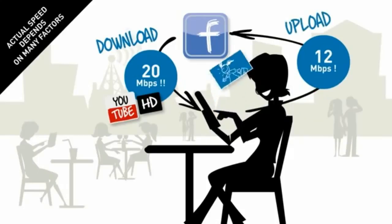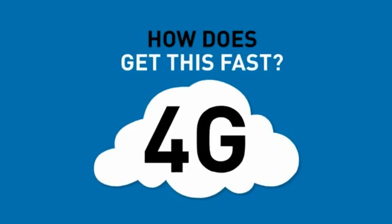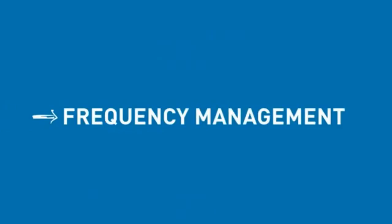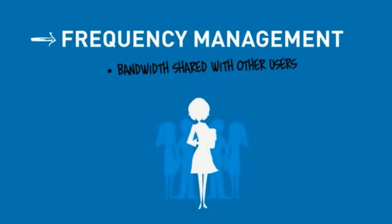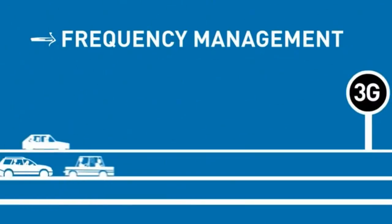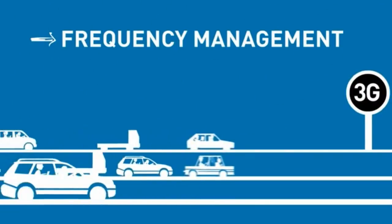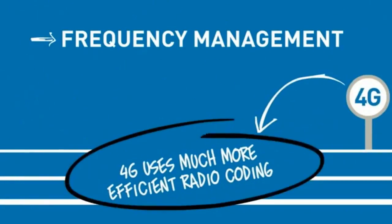Under normal conditions you will still reach average speeds of around 20 megabits per second for downloads and 12 megabits per second for uploads. So how does 4G get this fast? First of all, 4G has different frequency management. You share the available bandwidth with other users, but the way the frequency is shared is different in 4G compared to 3G. In 3G, your speed is regulated and limited.